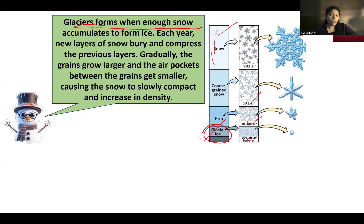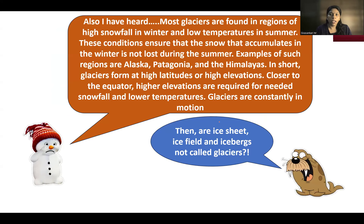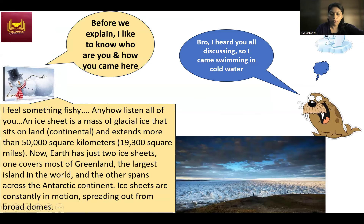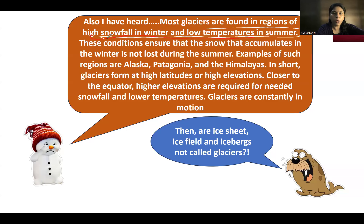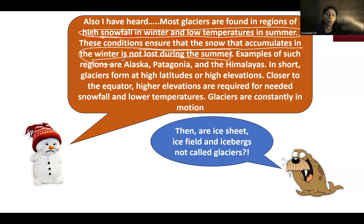For glaciers to form, there should be continuous snowfall in winters, and summer temperatures should not be high enough to melt the ice. These are the favorable conditions for glacier formation: high snowfall in winter and low temperatures in summer. This ensures snow accumulated in winter is not lost during summer. You can see glacier formations in regions like Alaska at higher latitudes.